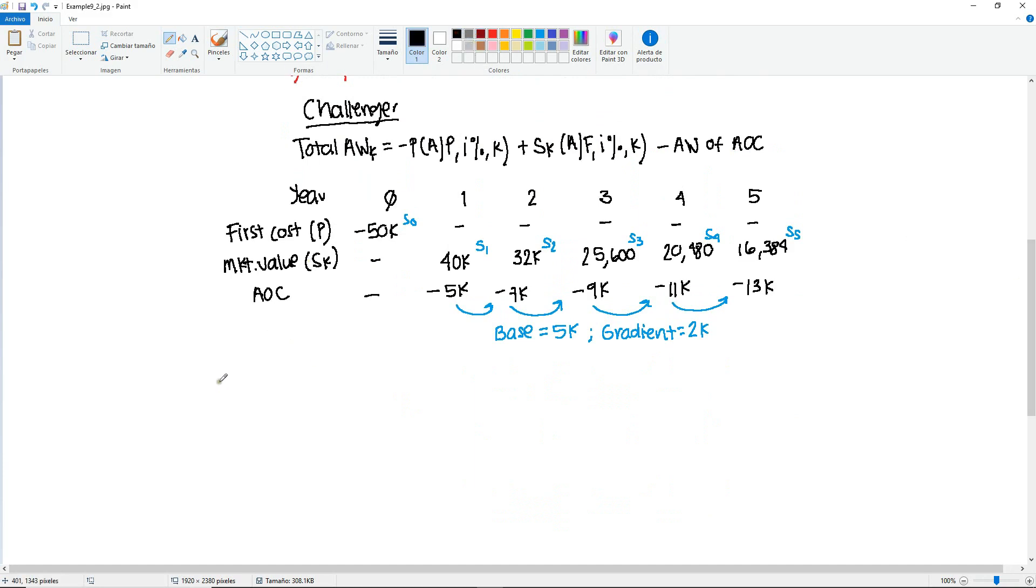Let's get the annual worth for year one. Minus 50,000, find A given P, at 10% for year one, plus 40, we only use the S1. 40,000, find A given F, 10%, also one. At this point, we only have the base. So we don't have a gradient yet because we are in year one. So for the first year, we only subtract the 5,000. So plug in your factors and you will get minus 20,000.